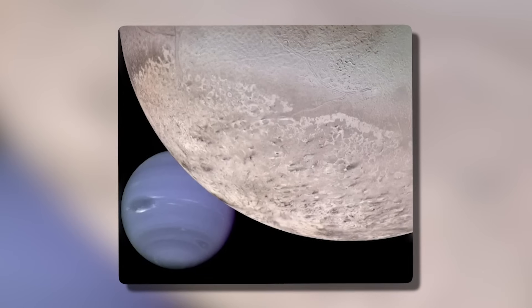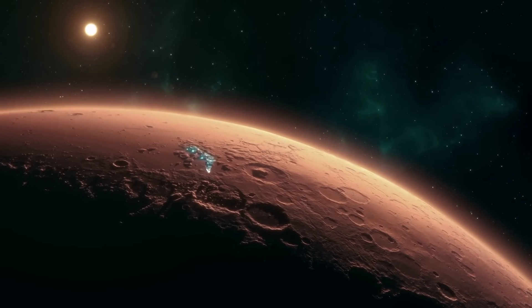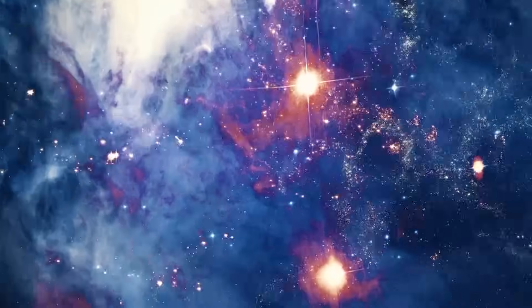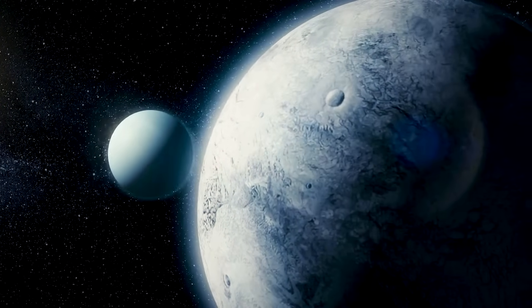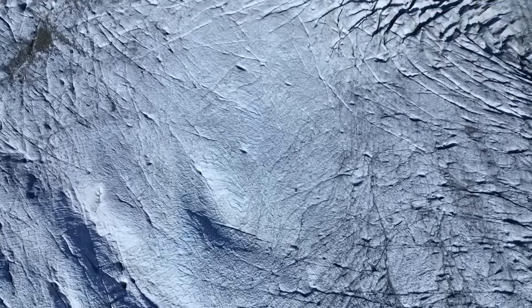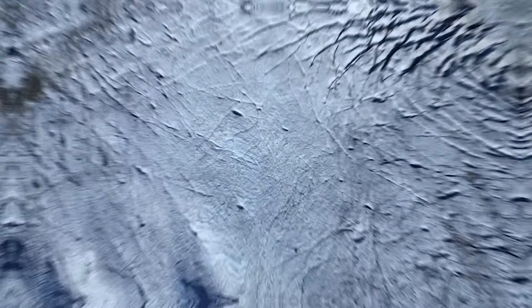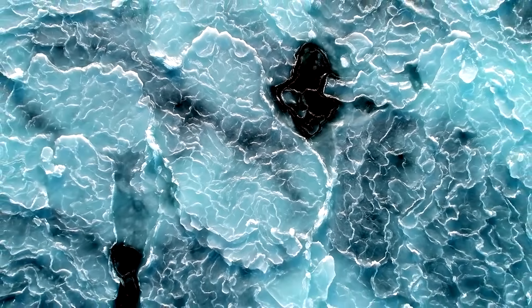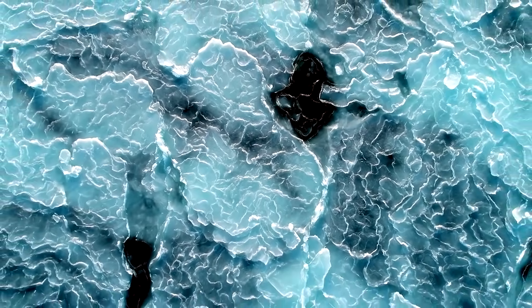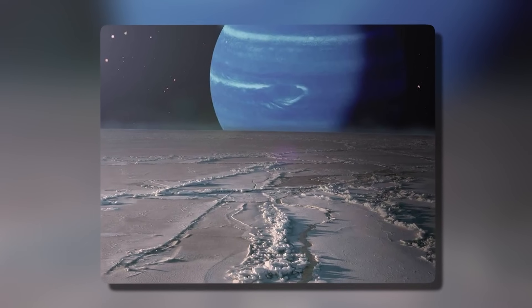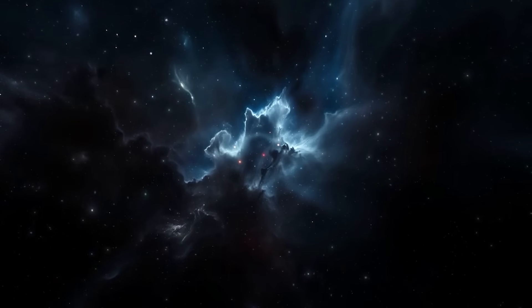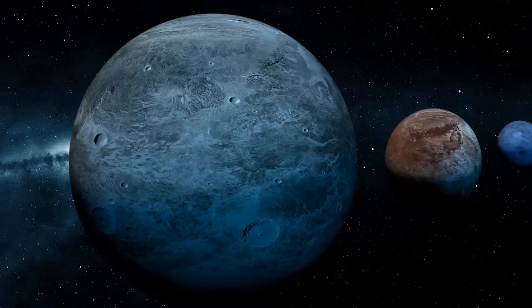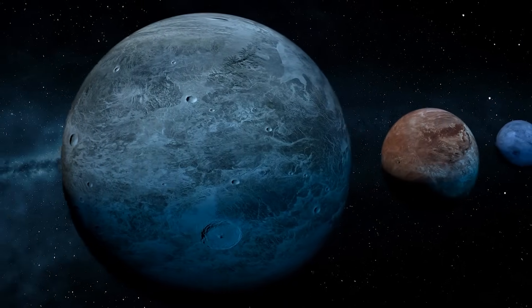Triton is already an enigma, a captured Kuiper Belt object with retrograde orbit and active cryovolcanism. But what Webb uncovered was unsettling. Spectral traces on Triton's surface that didn't match any known compounds found in the outer solar system. These compounds, possibly complex hydrocarbons or even ammonia-rich ices, suggested chemical interactions that may be happening below Triton's crust or between Triton and Neptune's magnetosphere. If Triton is actively exchanging material with Neptune, then the two bodies may be part of a larger dynamic system, more like a binary pair than a simple planet-moon relationship.